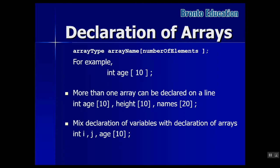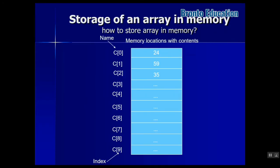You can also mix declaration of arrays with regular variables. For example, you can declare integer i, j, then h as an array of 10 elements. Inside memory, when you declare an array — for example, array C of 10 elements named C[0] up to C[9] — it will reserve memory for those 10 elements. If C is integer type, the first element, such as 24, is saved inside C[0].